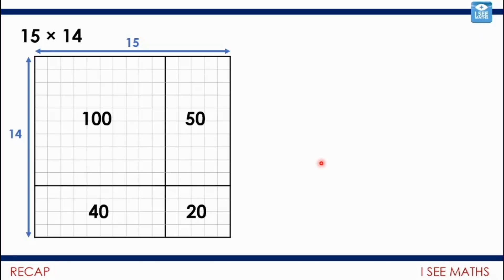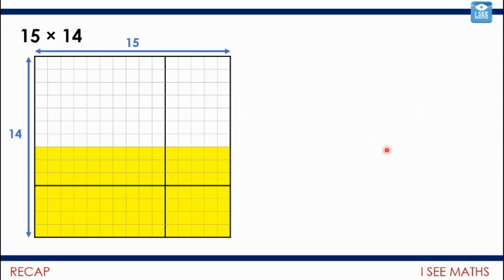But there is a way I can play around with these numbers to change the calculation. If I split this 14 into two sevens, I've got these two equal areas. I'm going to move this yellow part all the way up here. I'm going to double the 15 to make it 30 and halve the 14 to make it 7. So I've got the same number of squares. Now I've only got one calculation to do: 30 times 7, which is 210.